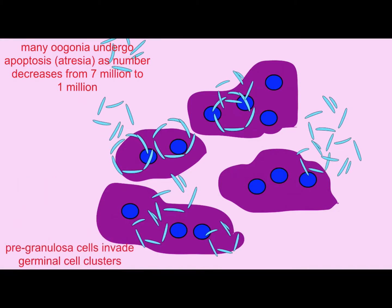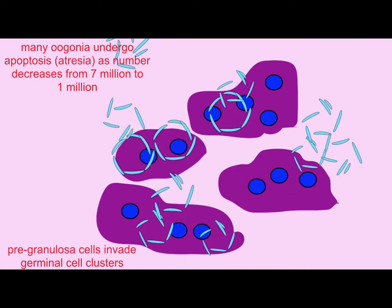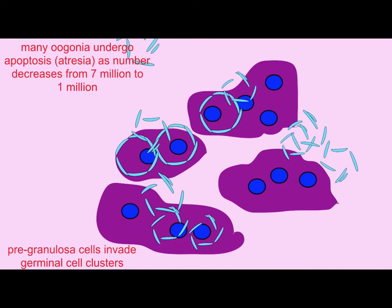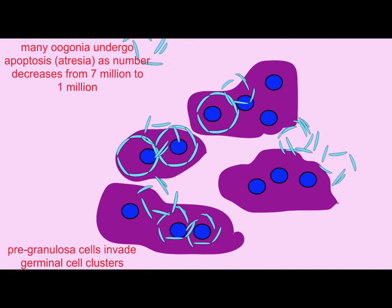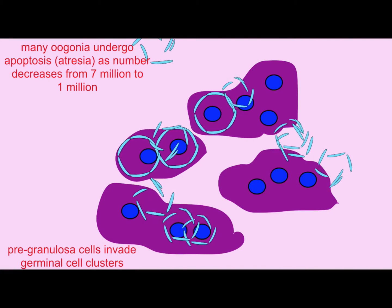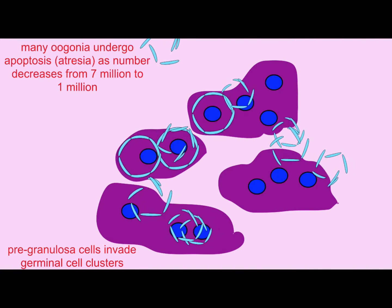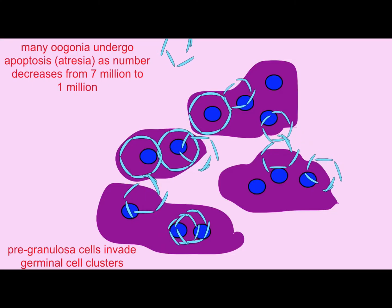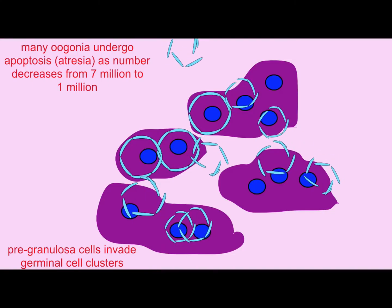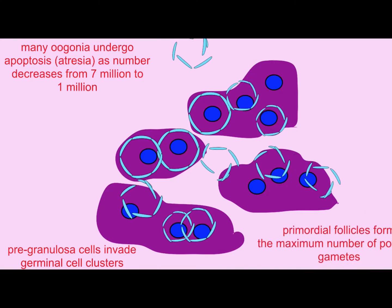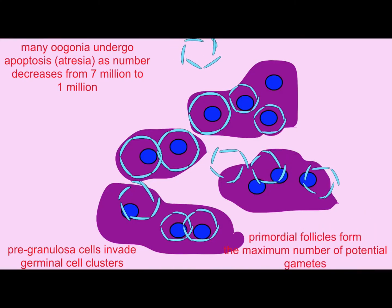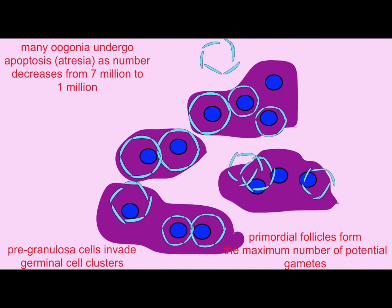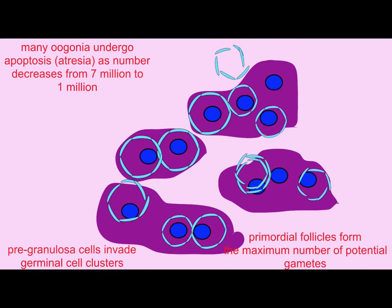At about this time, cells from the ovary known as granulosa cells are invading the syncytia and may have a role in the degradation of the syncytia. It is uncertain where these granulosa cells originate. It was originally thought they came from the mesonephros, although it is also possible they originate from the surface of the ovary.